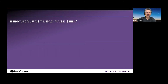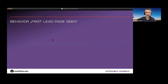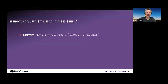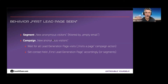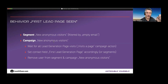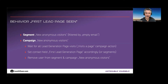The next method is tracking the first lead generation page seen. One solution is to have a segment that catches all users who visit any lead generation page, then create a campaign based on that segment. The campaign sits and waits. When the first lead page is reached, the campaign sets a contact field and leaves the segment. That's the most straightforward way to capture the first lead page seen.